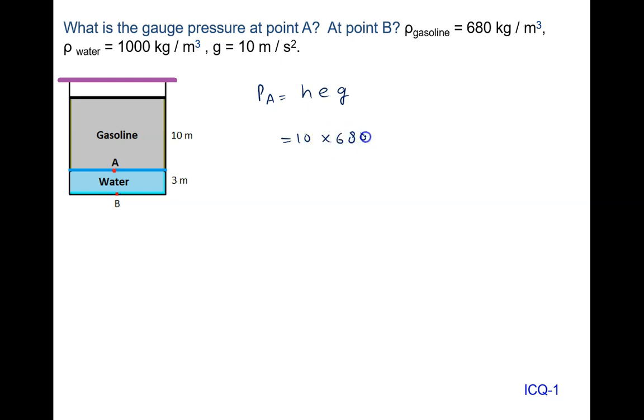What is the density? That is 680. What is gravity? That is 10. So pressure at point A is 68,000 newton per meter square. Then what is pressure at point B? Pressure at point B is the pressure at point A